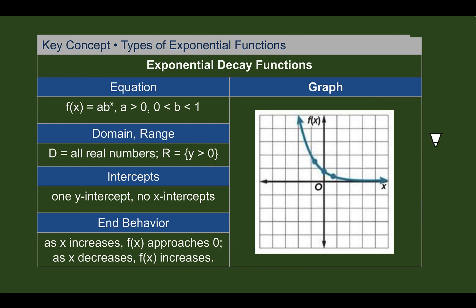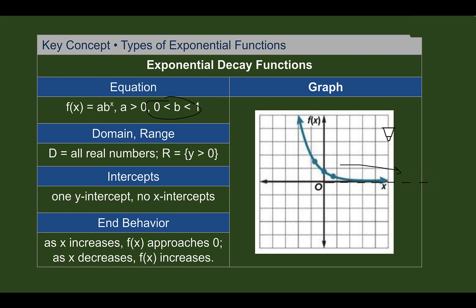For exponential decay functions, most features are the same, but the b value is between zero and one. The domain and range are the same. The intercepts are the same. However, for end behavior: as x increases going farther to the right, the end behavior approaches the asymptote at zero. As x decreases going left, y is increasing. So it's really just the opposite of what the growth functions were.